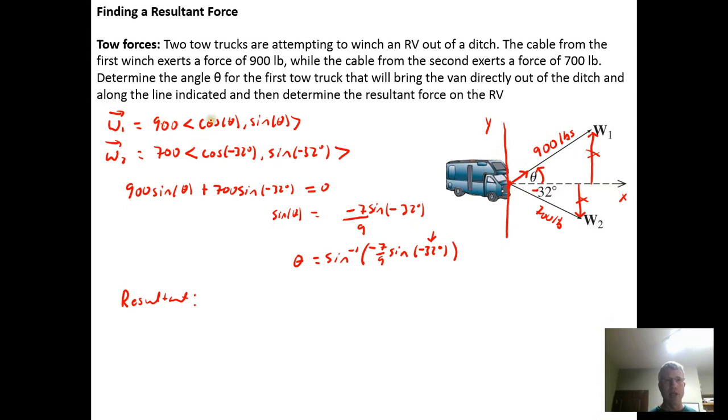The resultant force will be the force only in the horizontal direction because I picked theta to cancel the vertical direction out. So my resultant force will be 900 times the cosine of theta, but theta is just the sine inverse of negative 7 ninths times the sine of negative 32 degrees plus from the other winch. We would have 700 plus 700 times the sine, sorry, times the cosine. I need the horizontal components, so times the cosine of just the negative 32 degrees.